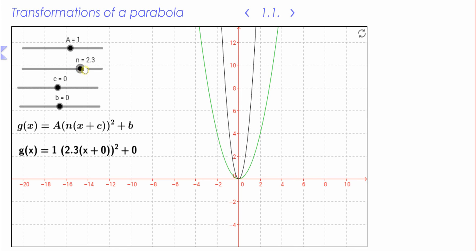I'm going to increase the value of n. It looks like it does something very similar to increasing the value of a. You can see n is increasing here. Note that n is actually being squared as well. So we get (x + c) multiplied by n and then squared. So that's the difference between n and a. One of the big differences is that n is actually inside the function.